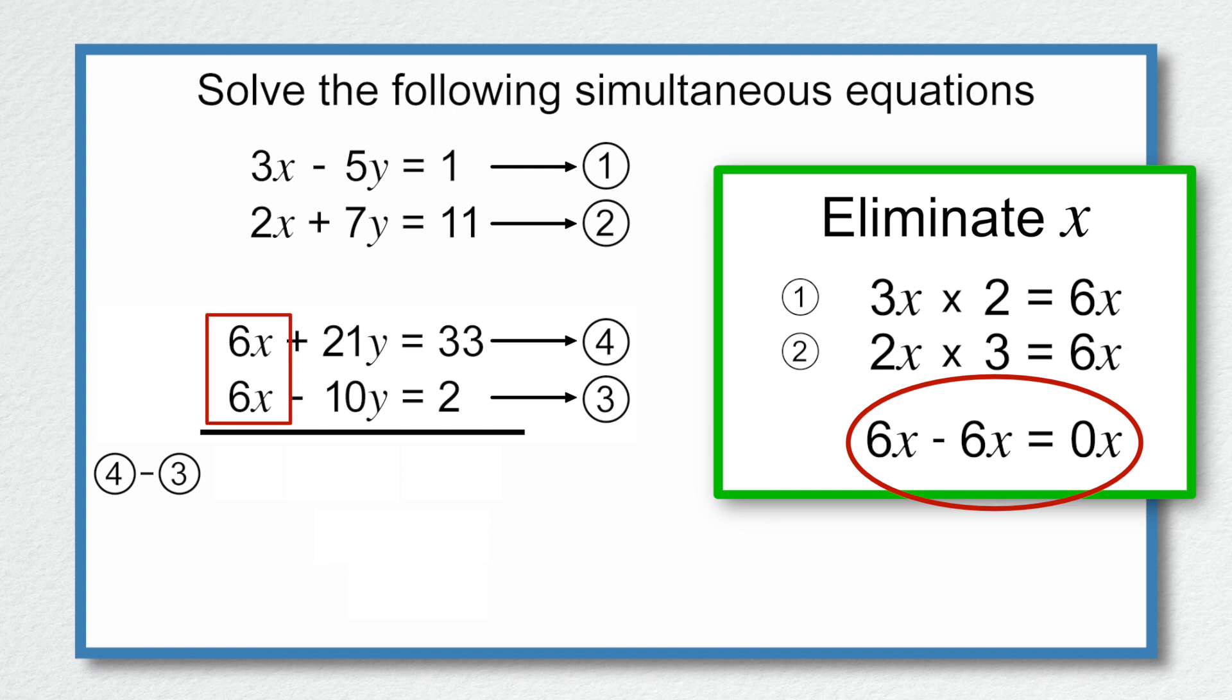6x subtract 6x is equal to 0x. Remember the point is to get rid of the x's. 21y subtract minus 10y is equal to 21y add 10y. A minus and a minus is a plus. And that's equal to 31y. And then we have 33 subtract 2, which is equal to 31. So we have 31y is equal to 31. So y must equal 1.